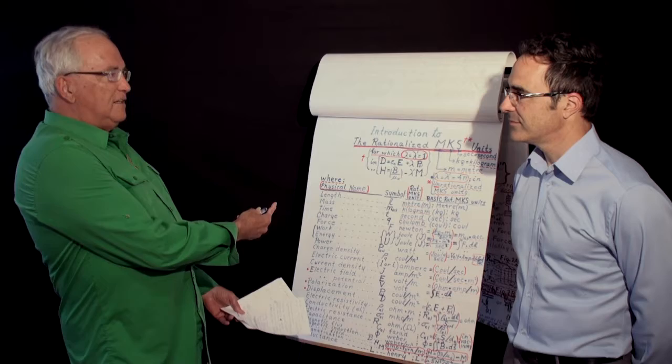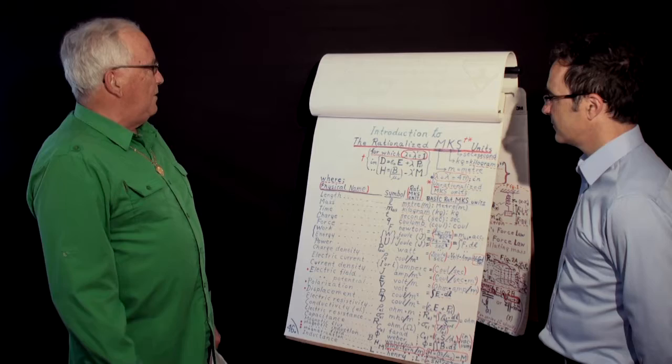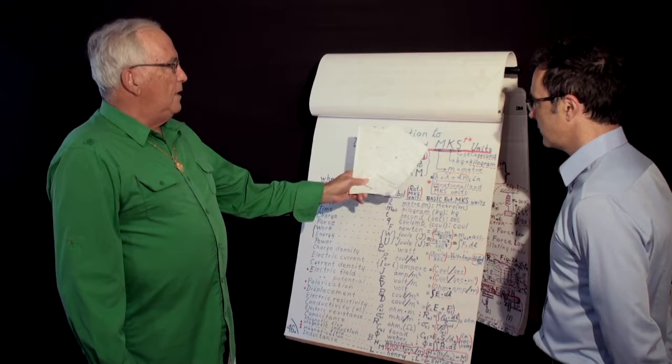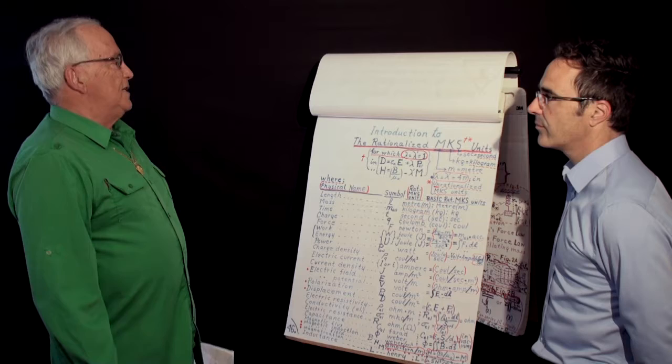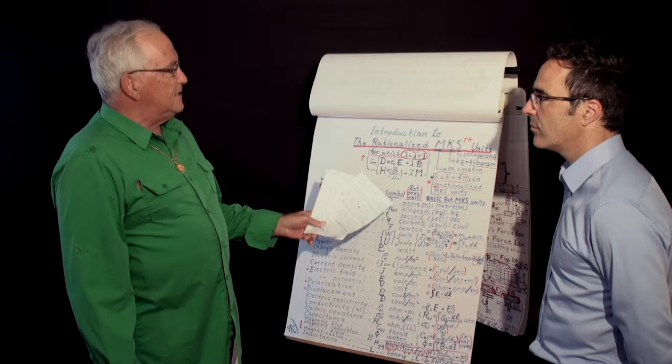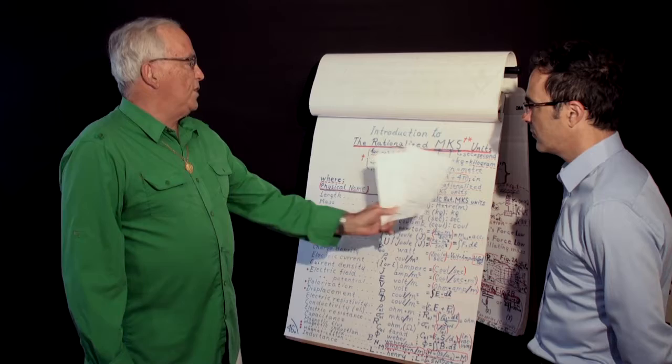I am pleased to present this clip about the Rationalized MKS for Meter, Kilogram, Second System of Unit. This is the International Scientific System of Unit and there is what we call Rationalized System and Un-Rationalized but the difference between the two is just one constant.